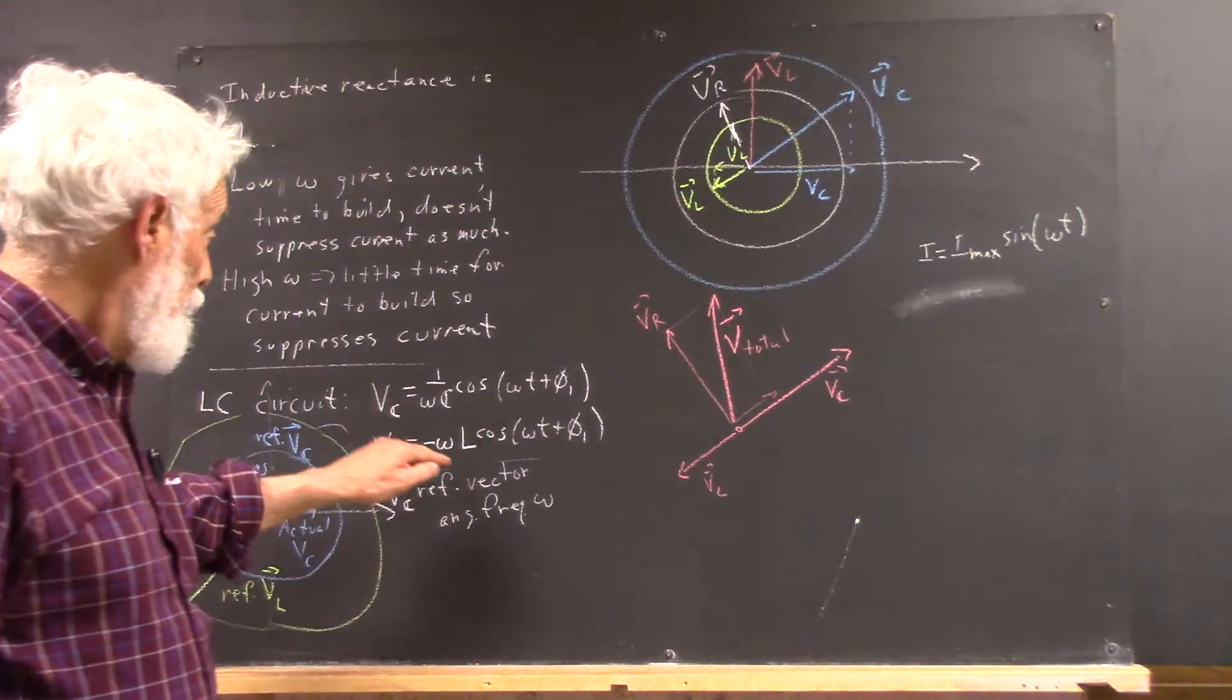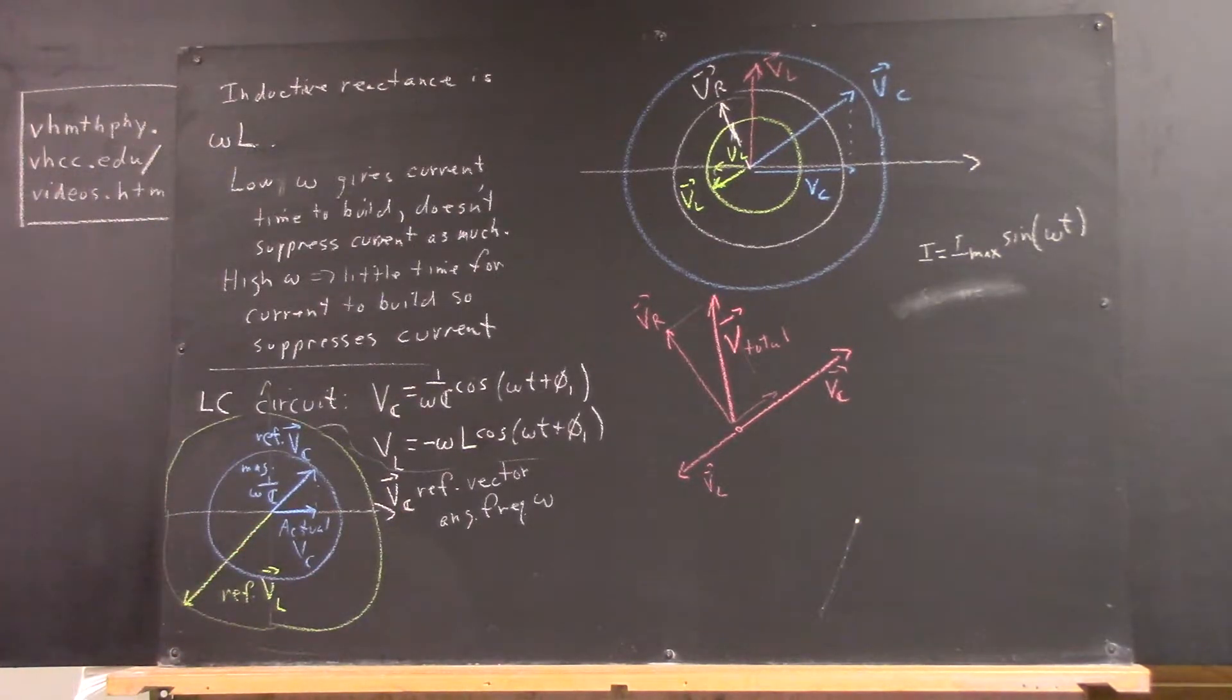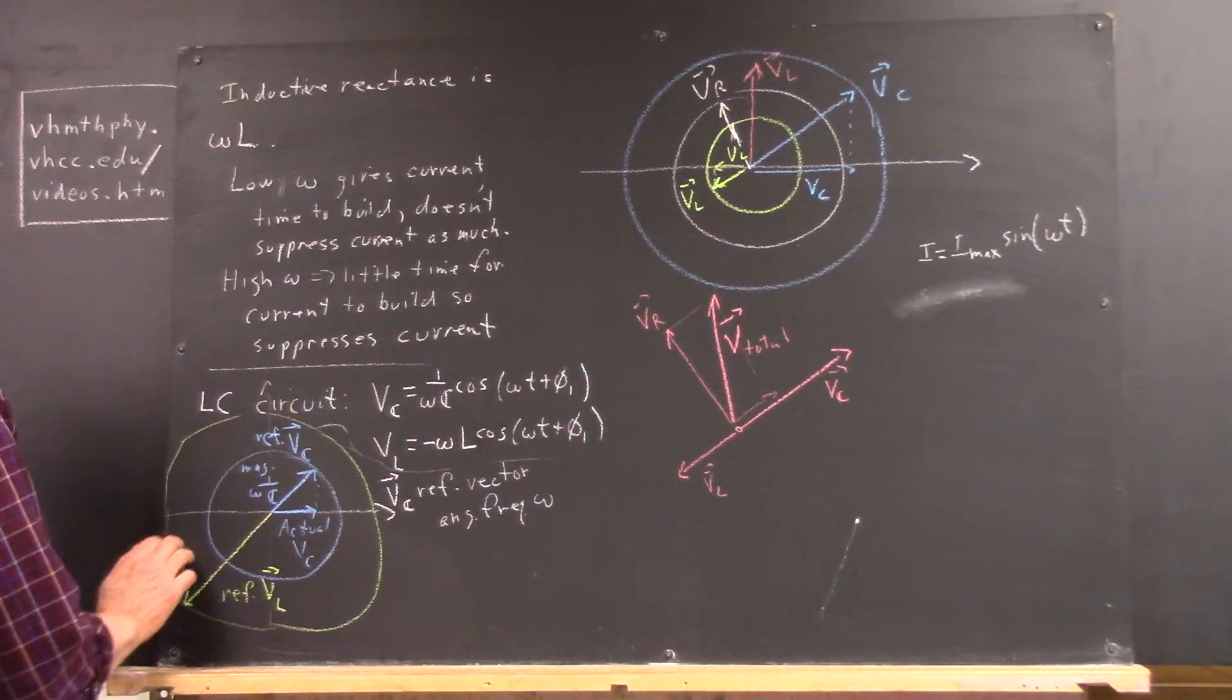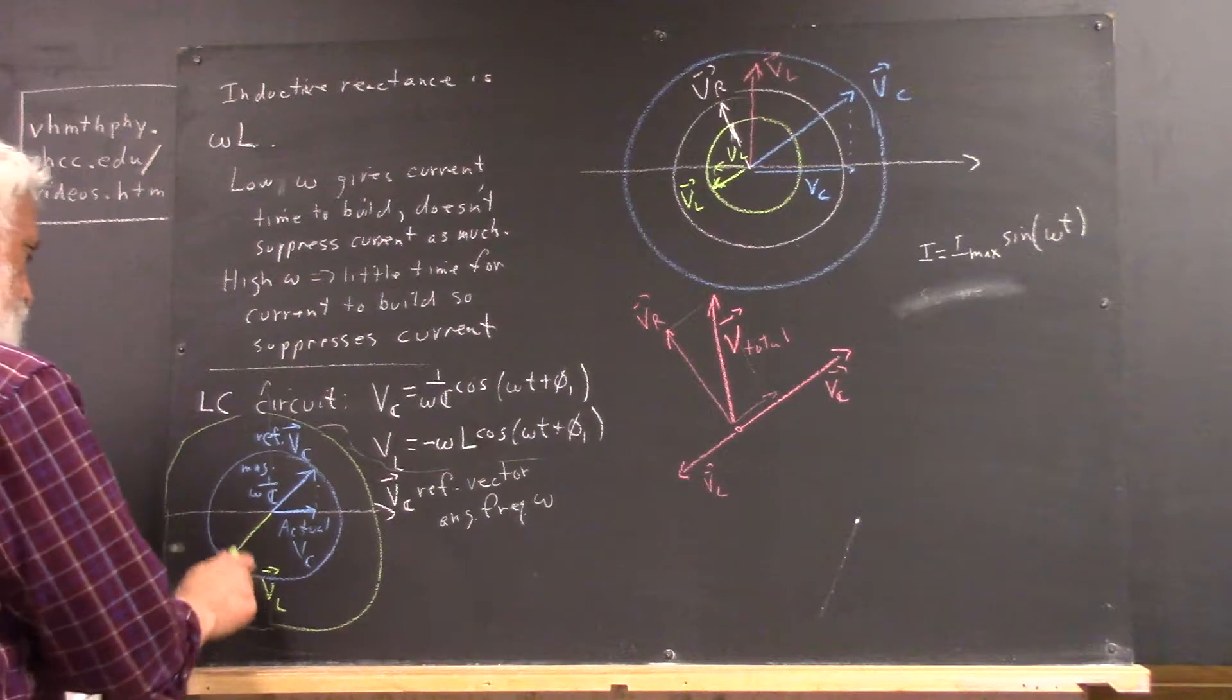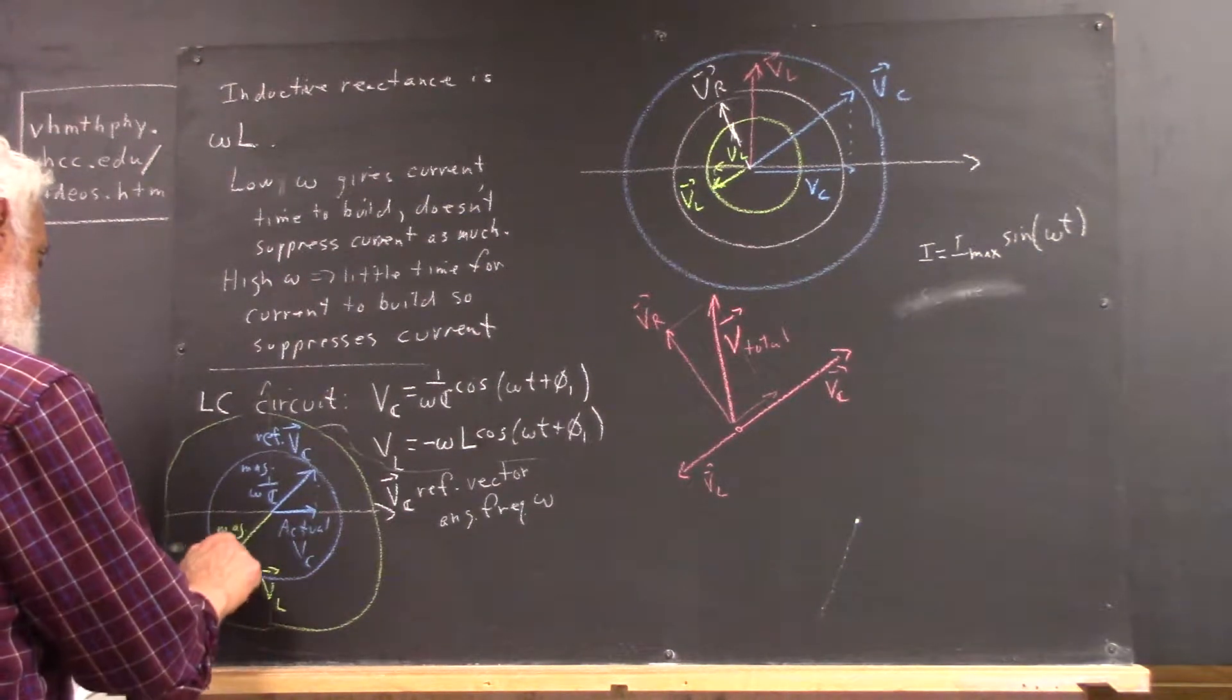Why is that? Well, because this is a negative multiple of the cosine. The magnitude is, I'm not sure I want to write that there. Magnitude is omega L.